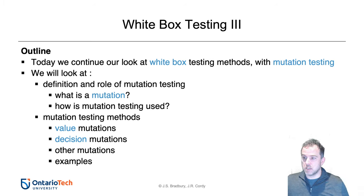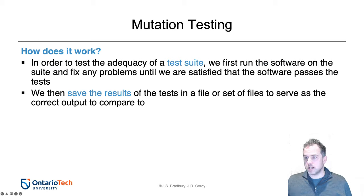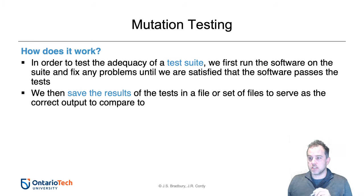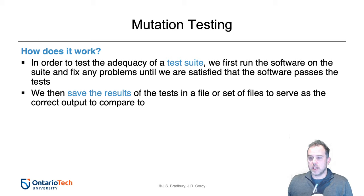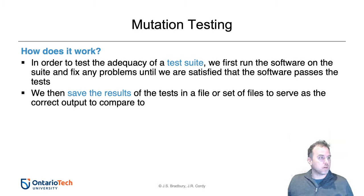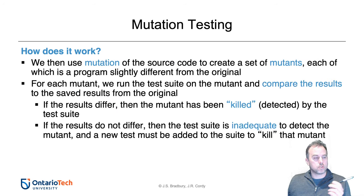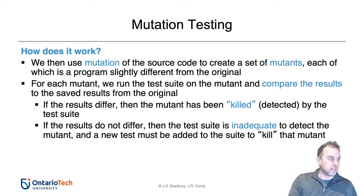So what do I mean by mutation? With mutation testing, we have our software system and our test suite. We run the test suite against our software and make sure all the bugs are fixed. What we're interested in is seeing if our test suite is good enough to find other faults — namely ones that we seed into the program systematically. We use the original unmutated code as our oracle to compare mutant outputs against. For each mutant, we run the test suite and if the results are different from the original, we say the mutant is killed.